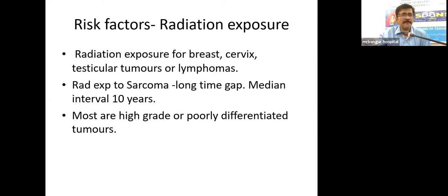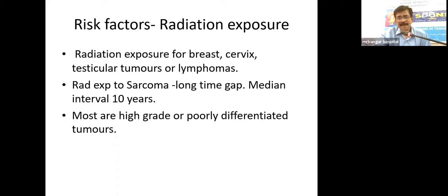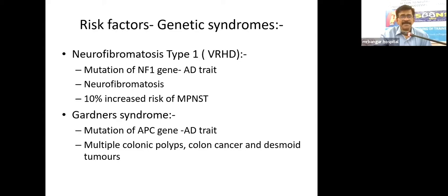One important risk factor for development of retroperitoneal sarcoma is previous radiation exposure. Patients treated for breast cancer, cervical cancer, testicular tumors, or lymphomas with radiation are at risk. There is a long gap between radiation exposure and sarcoma development — the median interval is about 10 years. Radiation-induced sarcomas are mostly high-grade or poorly differentiated tumors.